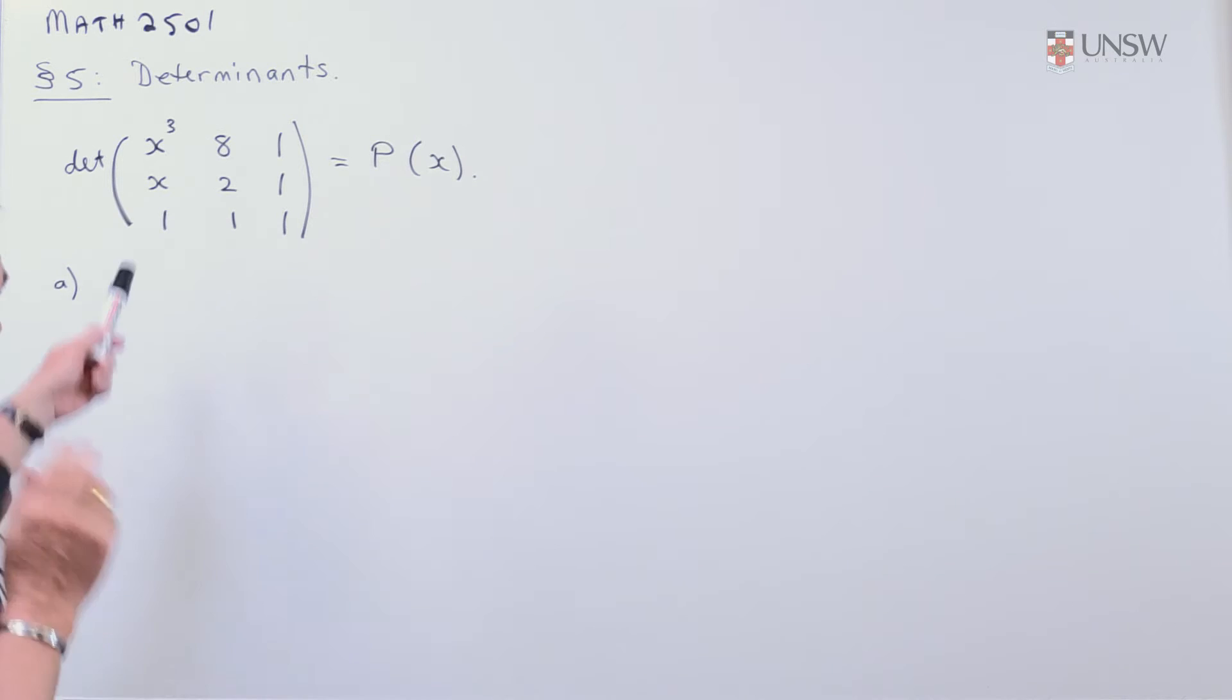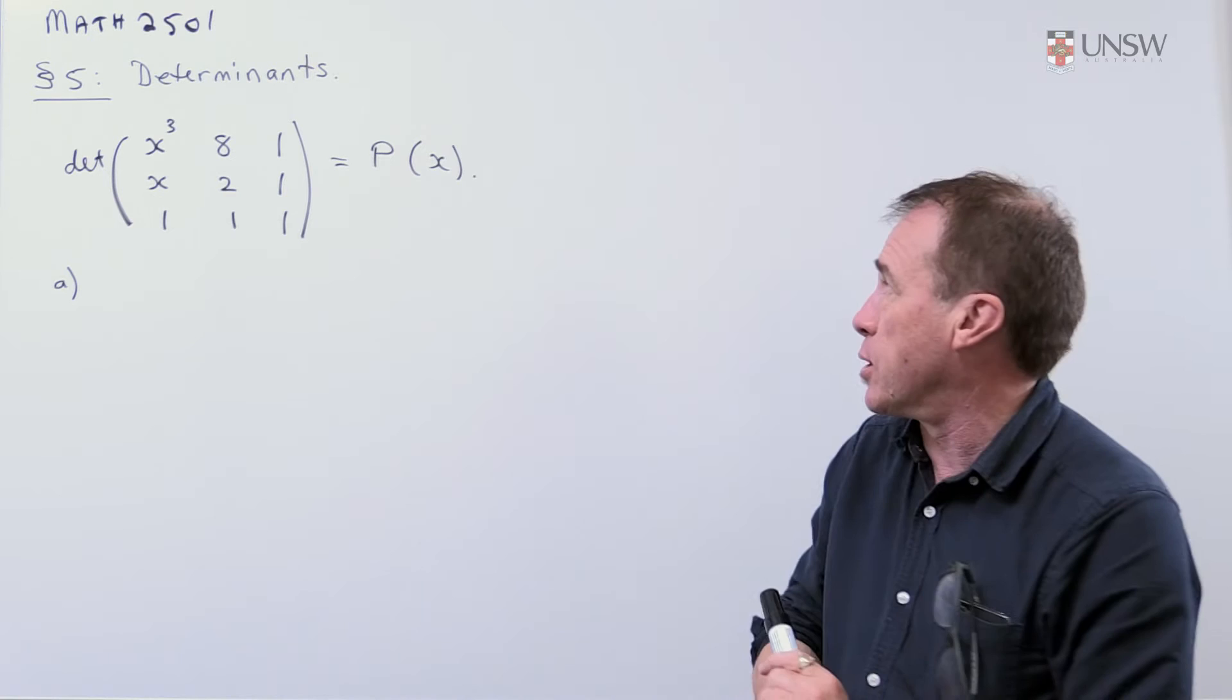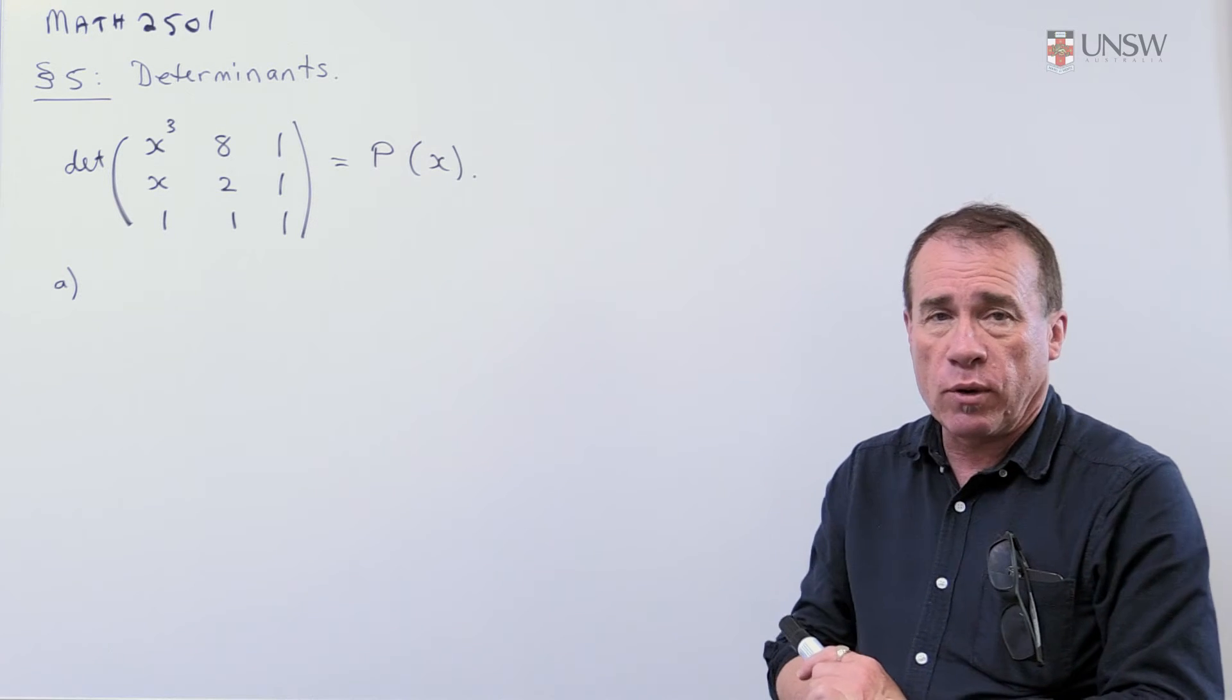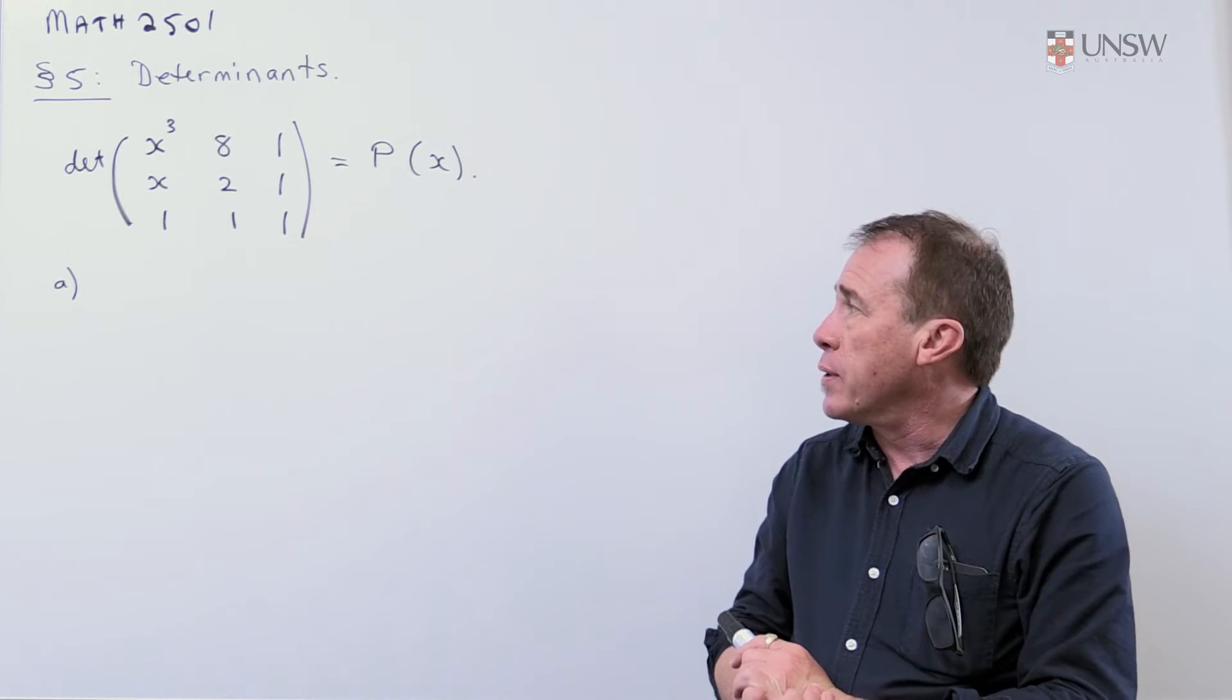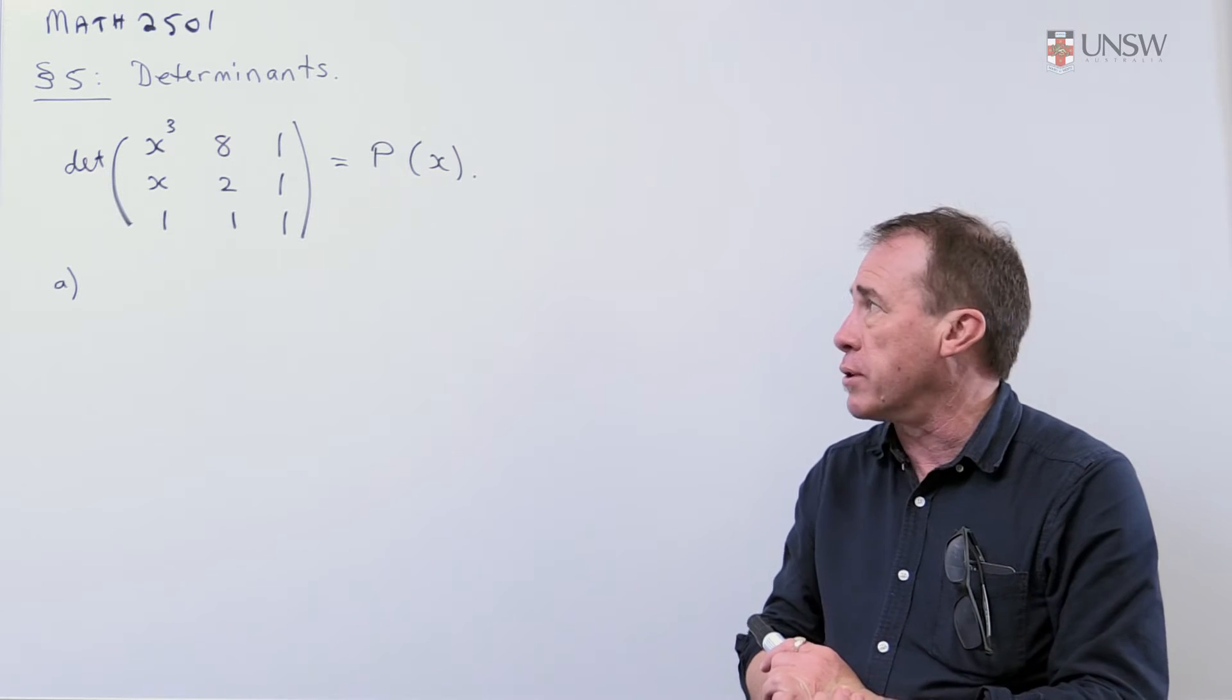The first one gives you a determinant of this 3 by 3 matrix, and it's got some numbers and some x's in it. And the first part of the question asks you to explain why the determinant of this matrix is a polynomial of degree 3.